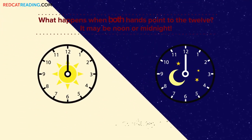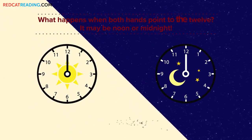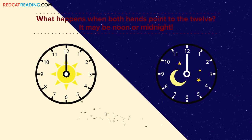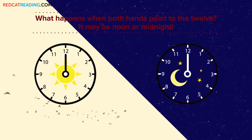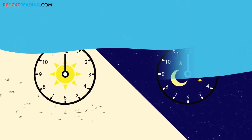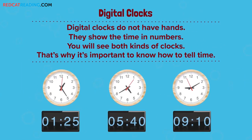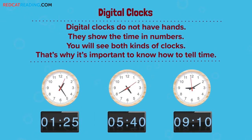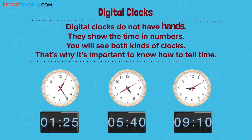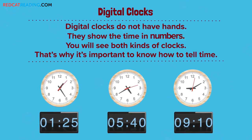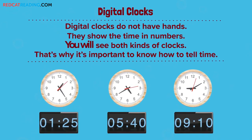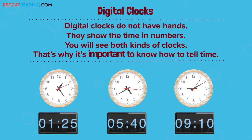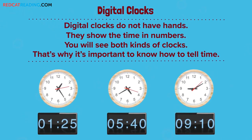What happens when both hands point to the twelve? It may be noon or midnight. Digital clocks do not have hands. They show the time in numbers. You will see both kinds of clocks. That's why it's important to know how to tell time.